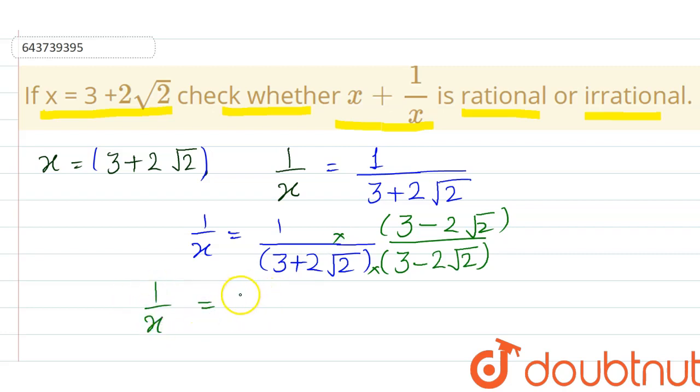Now simplify it. 1 upon x equals, in numerator nothing to multiply so it will remain 3 minus 2 root 2. In denominator, apply identity a plus b times a minus b, so it will be 3 square minus 2 root 2 square.